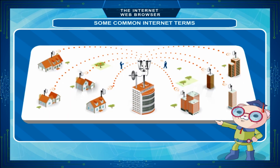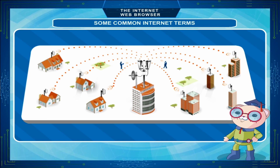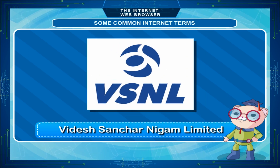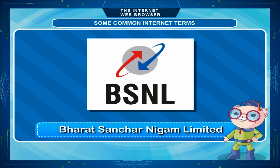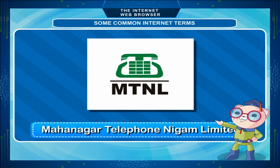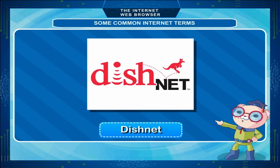The Internet Service Provider or ISP is an organization that provides services for accessing and using the internet. To connect with the internet, we need an Internet Service Provider or ISP. An ISP provides us the connectivity to internet on payment of nominal charges. Some ISPs in India are VSNL, BSNL, MTNL, Satyam, Reliance, Dishnet, etc.